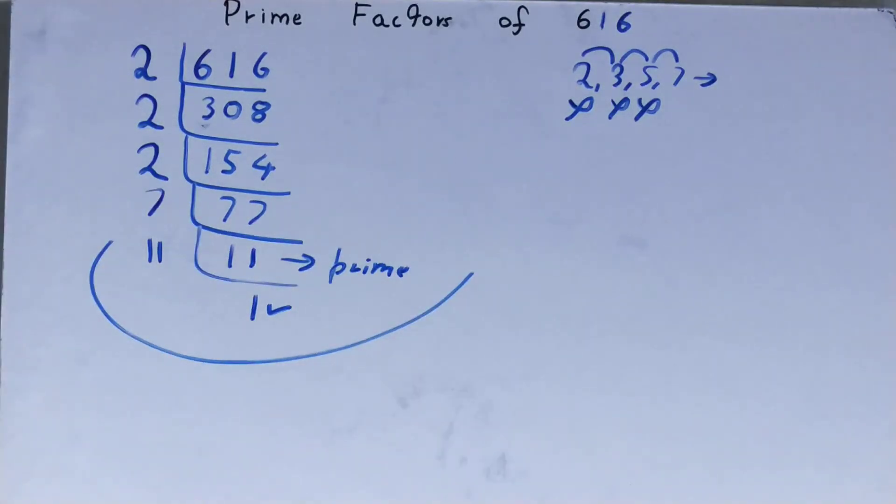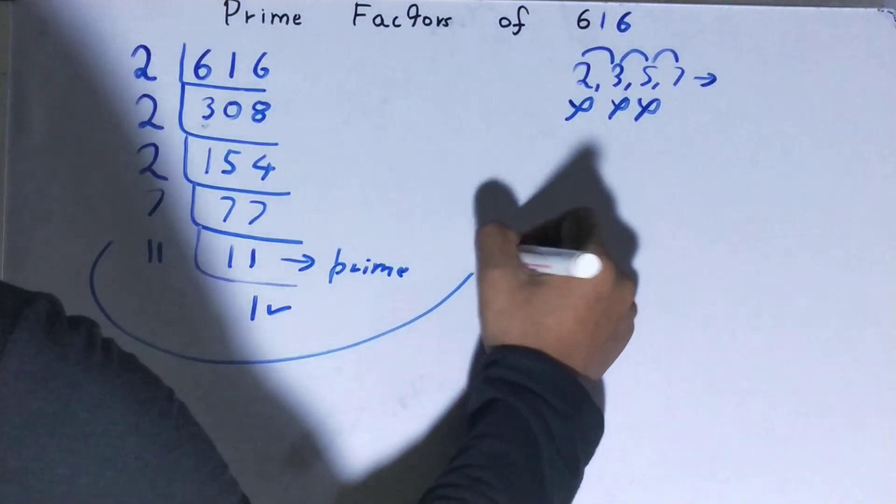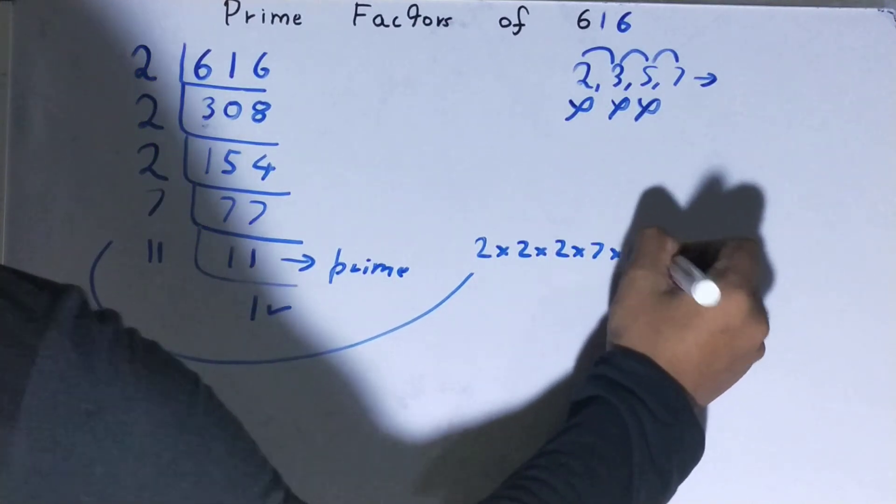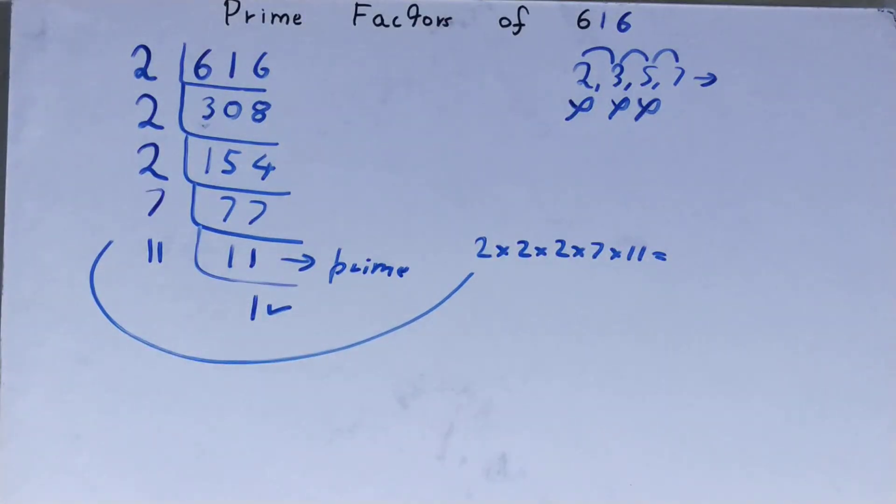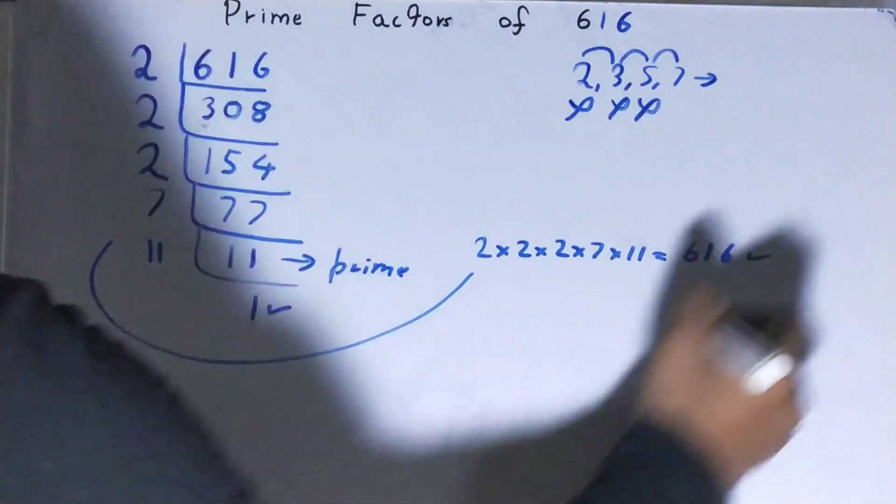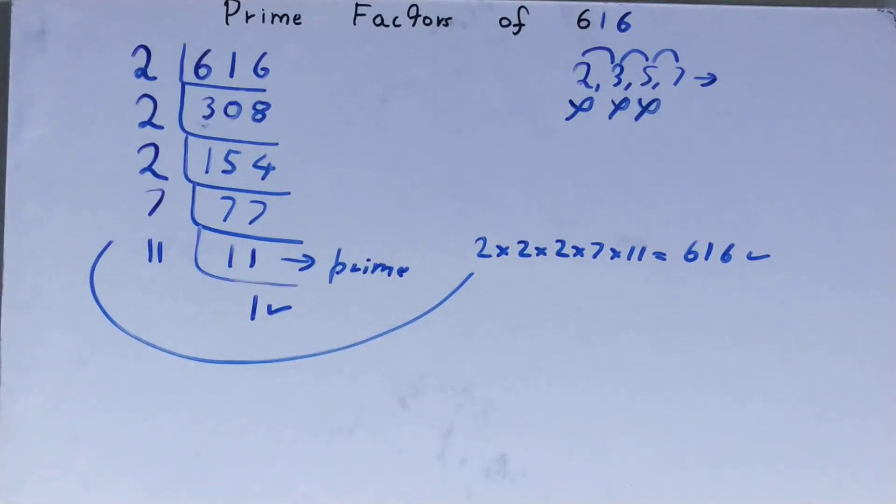Whatever you have on the left-hand side will be the prime factors of the number 616, that is 2 × 2 × 2 × 7 × 11. Now, if you want to check whether it is right or not, you can multiply it, and if on multiplying you are getting the number back again, that means your calculation is correct.